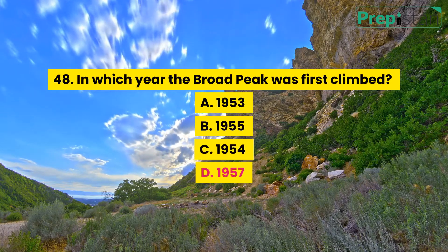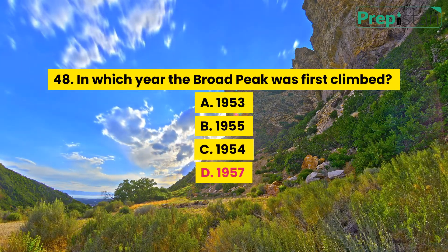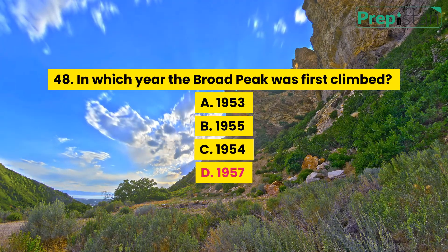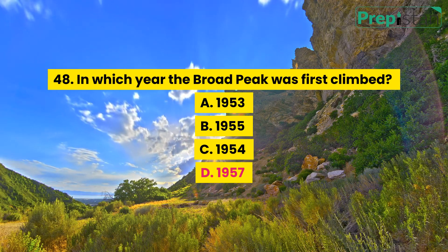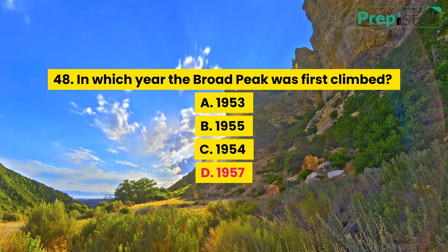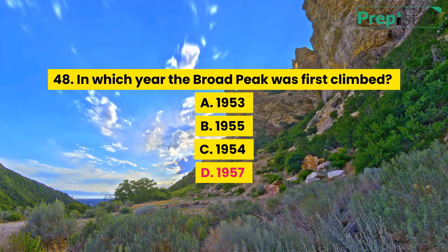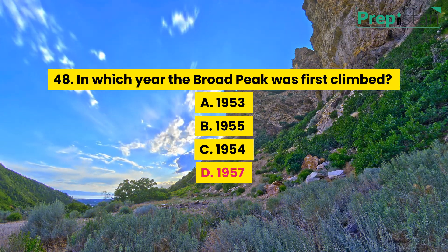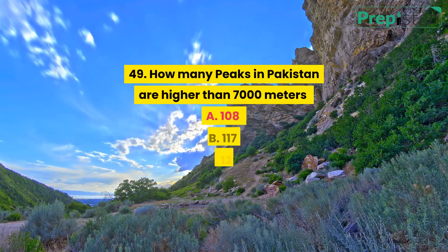Question 48: In which year was Broad Peak first climbed? A. 1953, B. 1955, C. 1954, D. 1957.